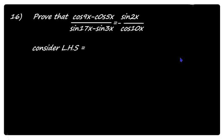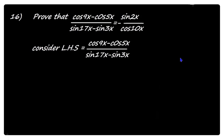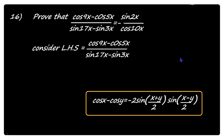For that, you first consider the left hand side. The left hand side is cos 9x minus cos 5x divided by sin 17x minus sin 3x. The numerator is of the form cos x minus cos y, and the denominator is of the form sin x minus sin y. Apply the formula cos x minus cos y in the numerator: it equals minus 2 sin((x+y)/2) into sin((x-y)/2).